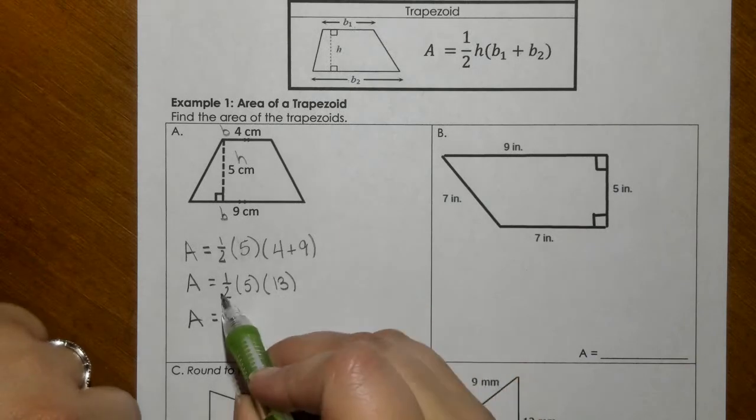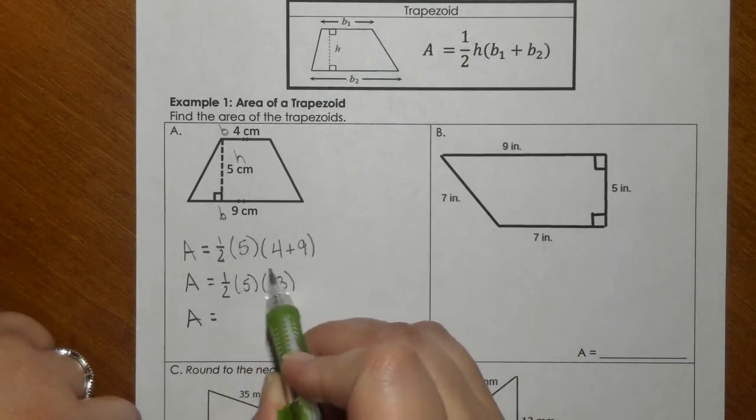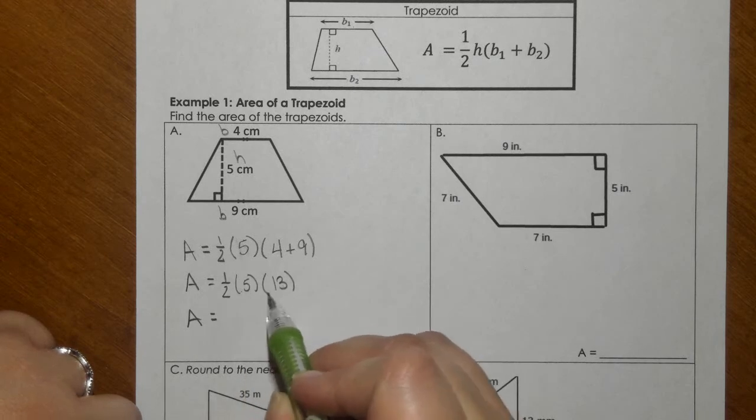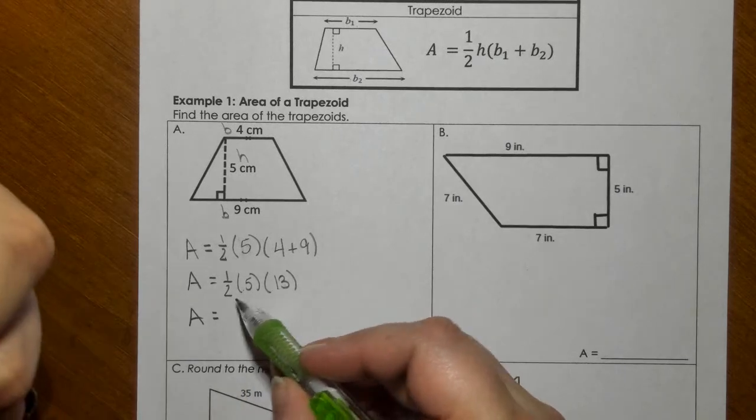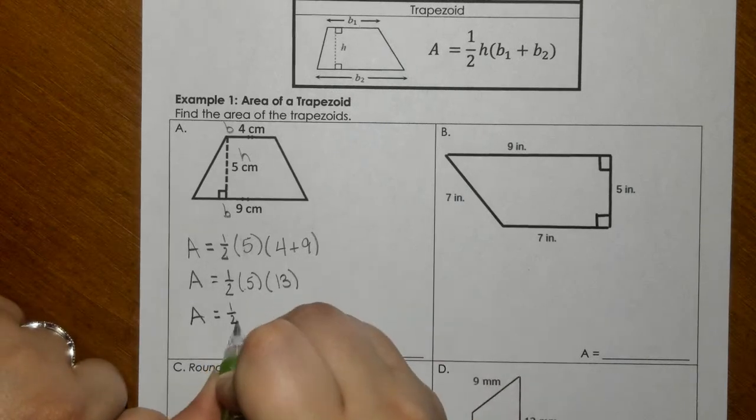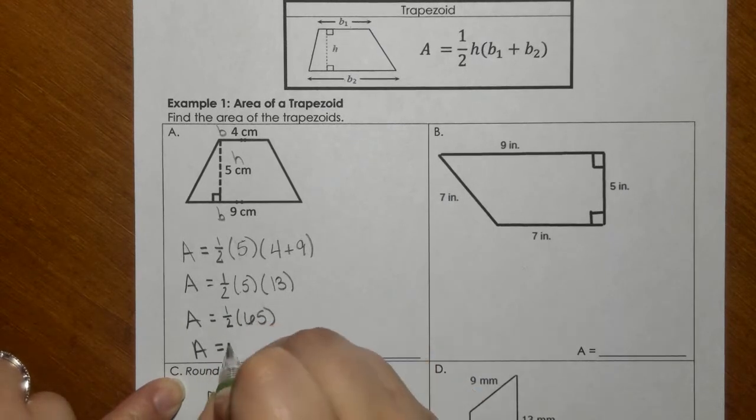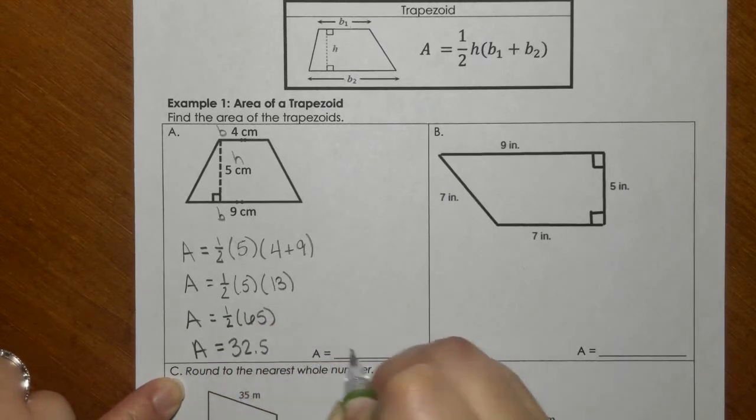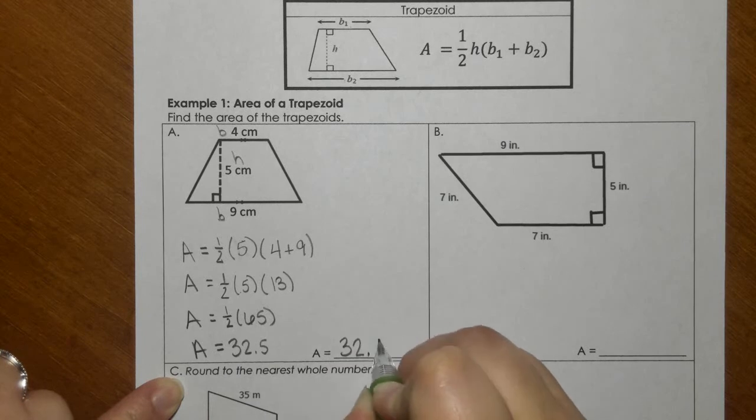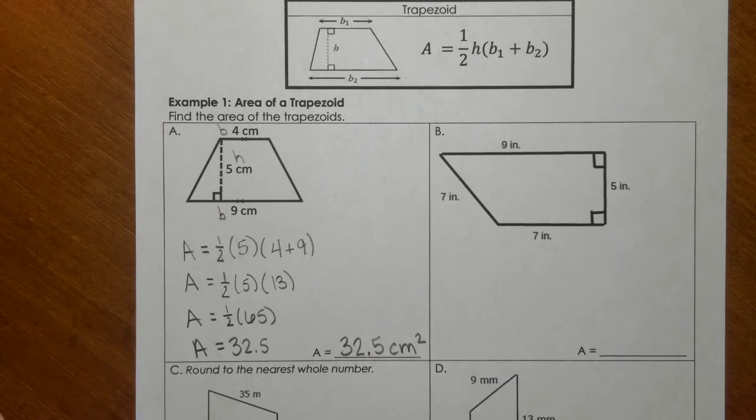So instead of going like one-half times 5 times 13, I usually just multiply the whole numbers together first, especially if they're odd numbers because they're not divisible by 2. So 5 times 13 gives me 65, and then I take half of that and I get 32.5. The directions have nothing up here for letter A about rounding, so I'm just going to leave it 32.5.